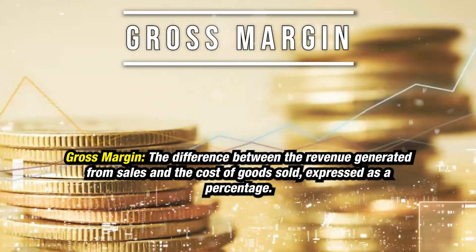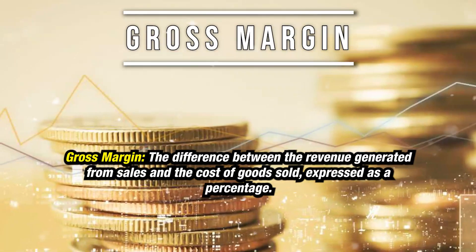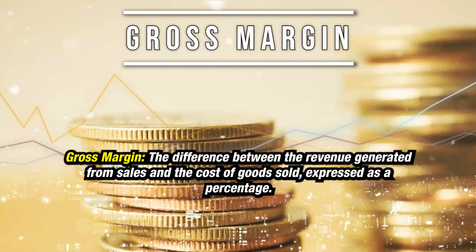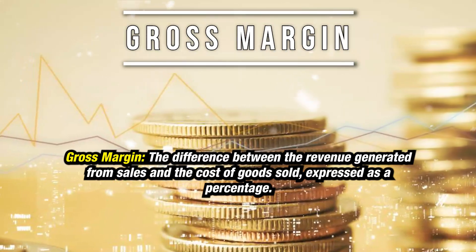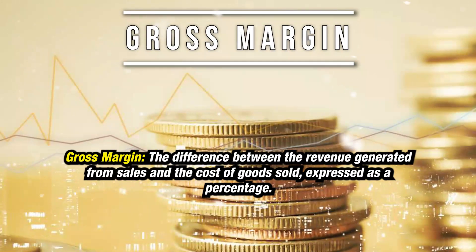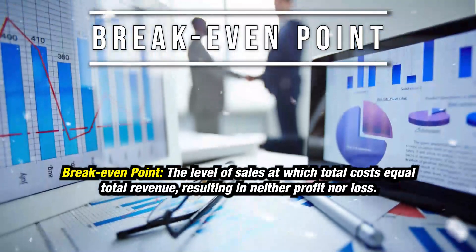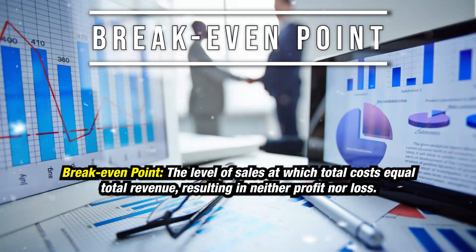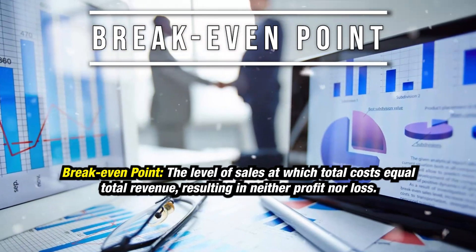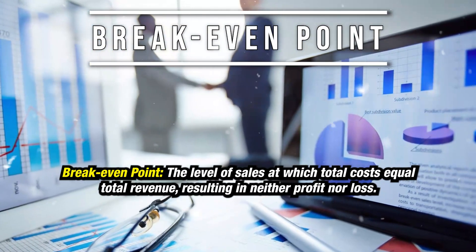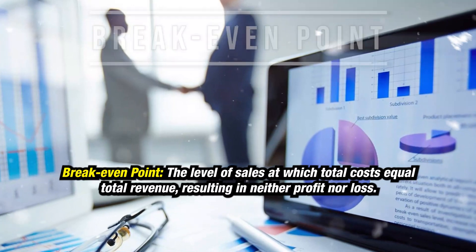Gross margin: the difference between the revenue generated from sales and the cost of goods sold, expressed as a percentage. Break-even point: the level of sales at which total costs equal total revenue, resulting in neither profit nor loss.